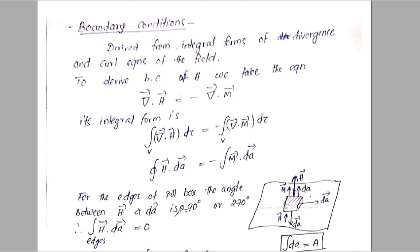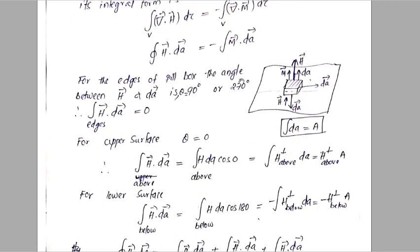In this video, we will be discussing the integral form: the closed surface integral of H dot dA on the left-hand side, and the right-hand side becomes the closed surface integral of M dot dA. You have to be careful to put a ring over this integral to indicate a closed surface integral.